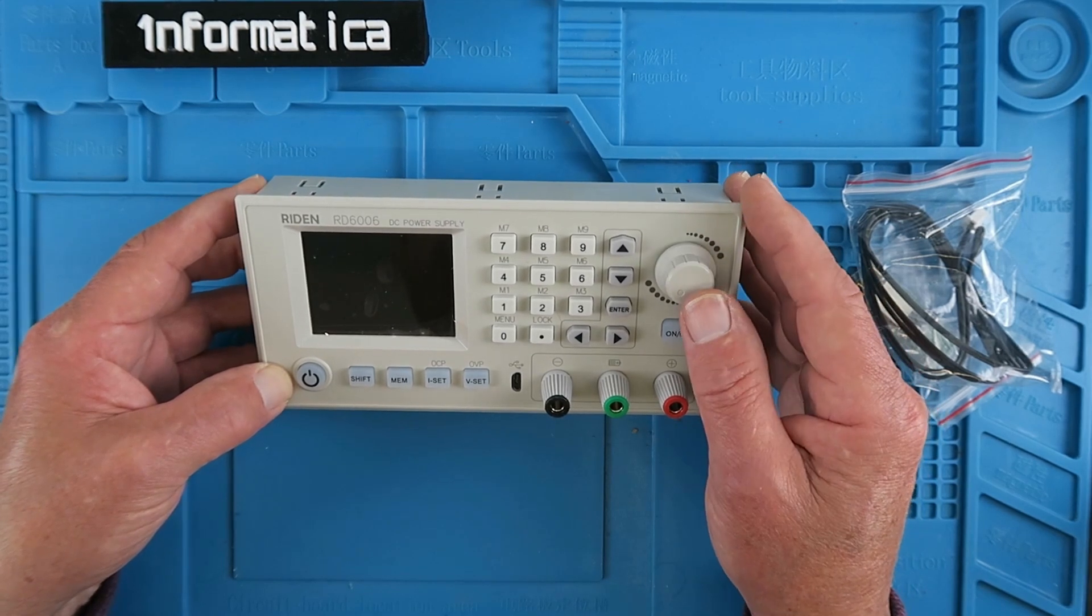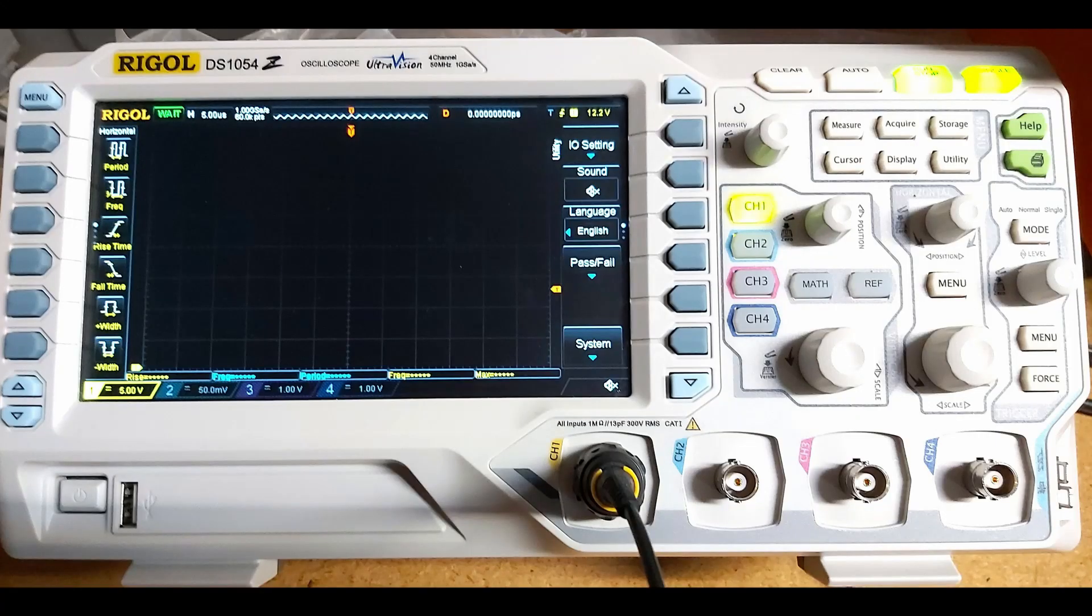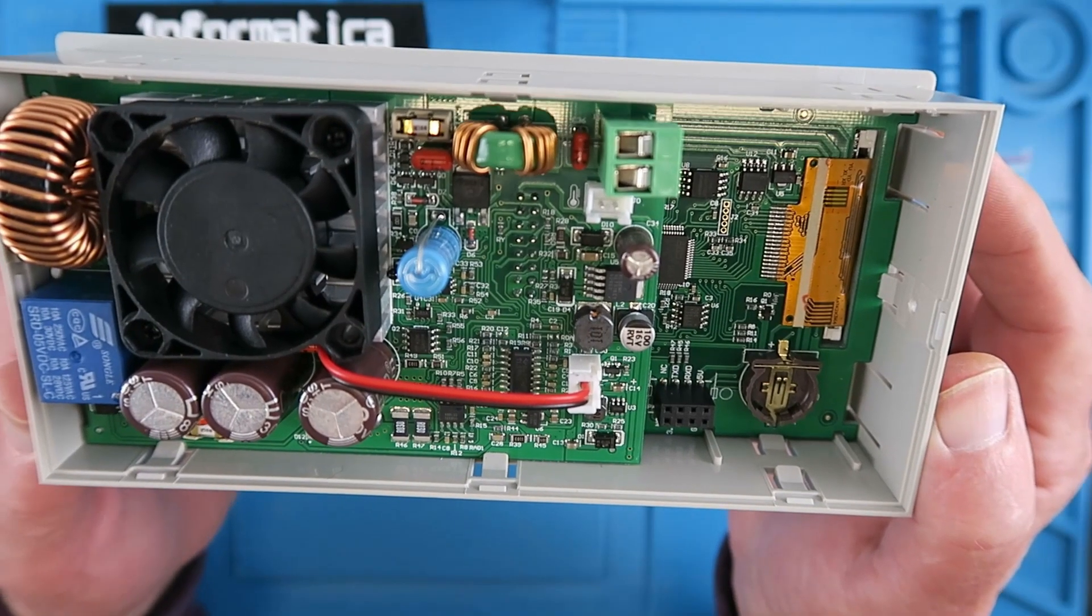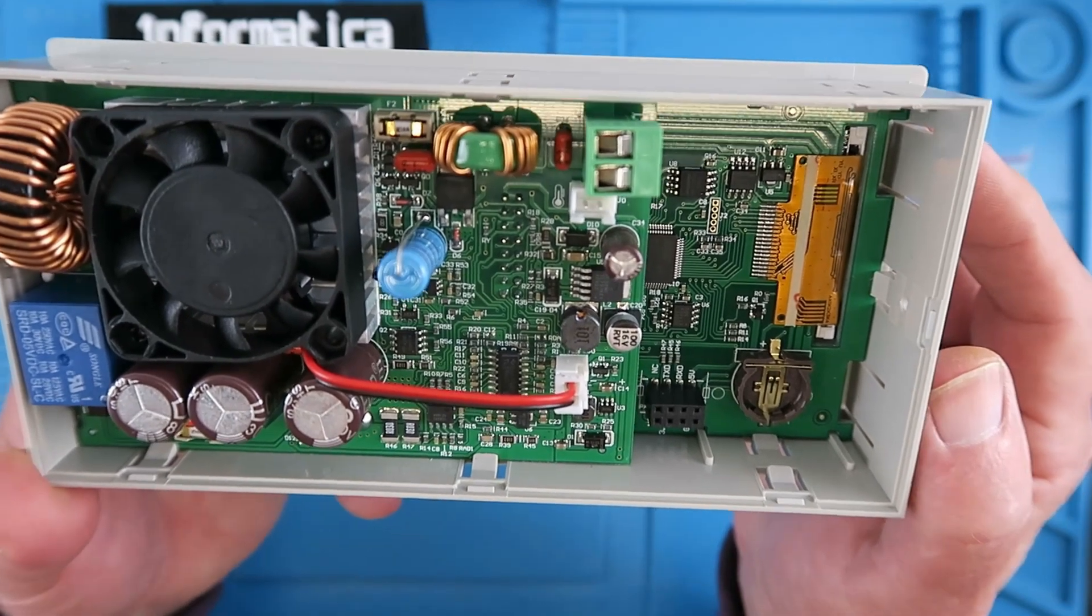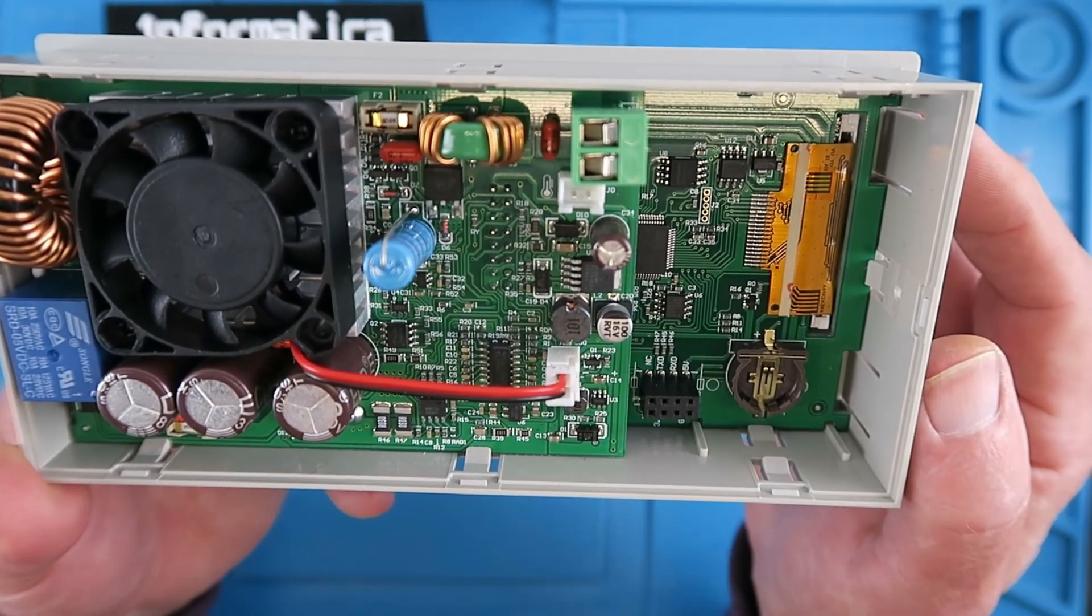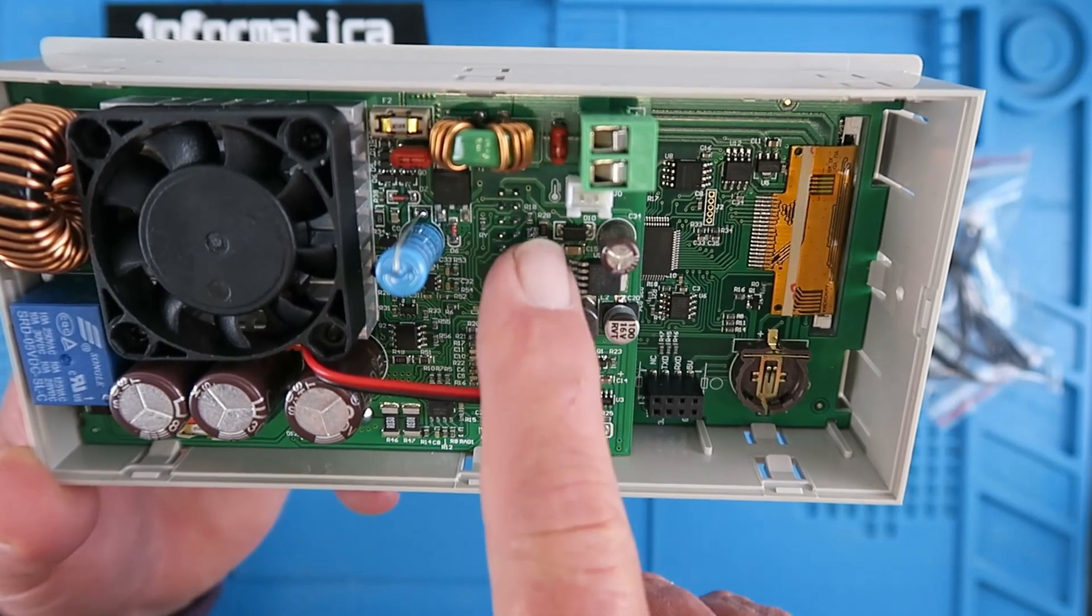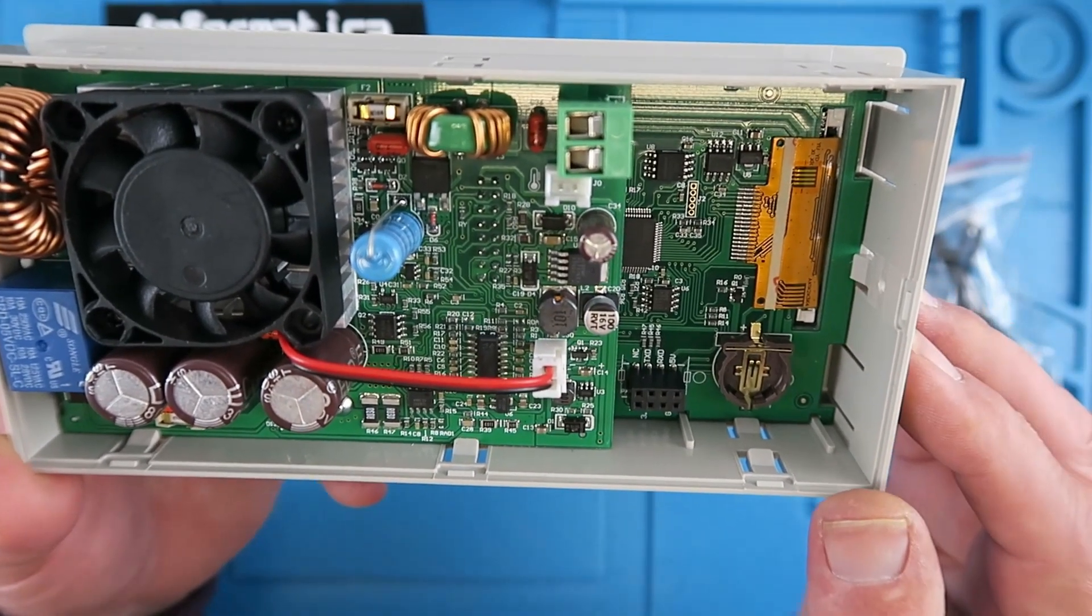I'm reminded when I look at this of my Rigel oscilloscope. It's a similar construction and quality. Again, looking at the internals, you can see that a lot of thought has gone into the layout. Everything is marked. There's the temperature sensor connector, for example.